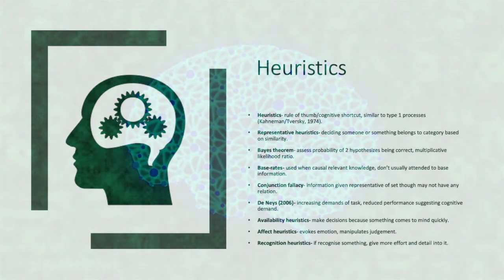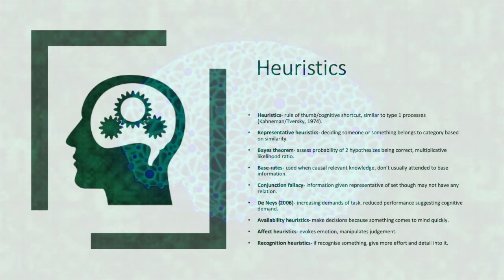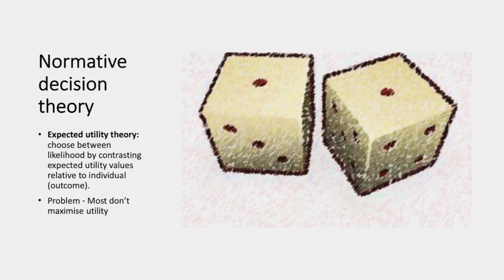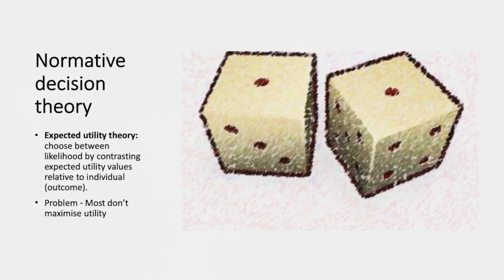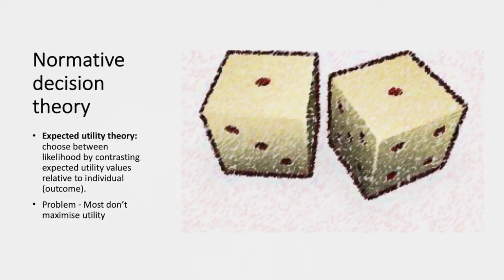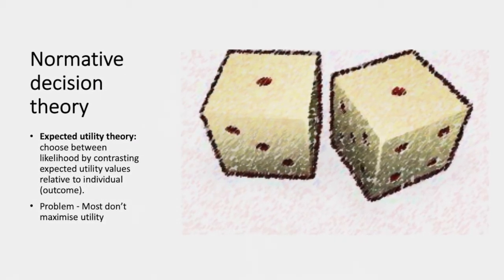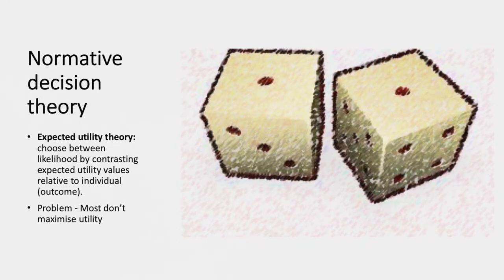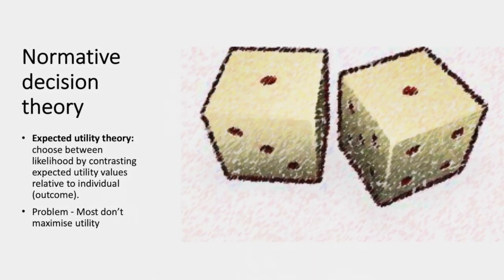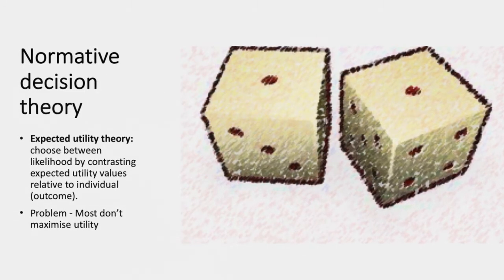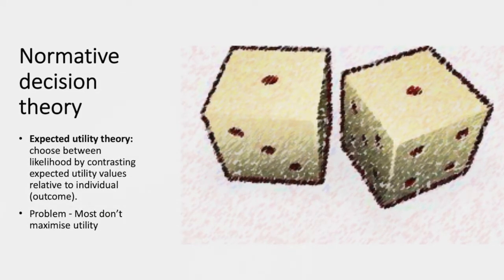Normative decision theory postulates expected utility theory, where individuals choose between the likelihood of two events occurring by contrasting the expected utility values relative to the individual or outcome. The problem with this is that most don't maximize utility.